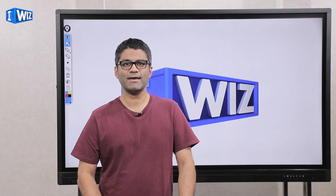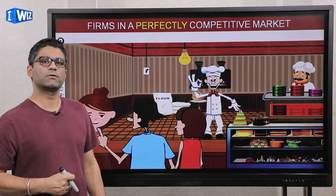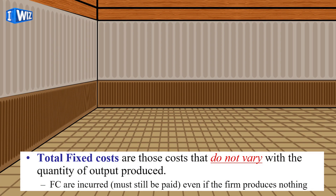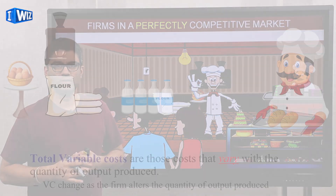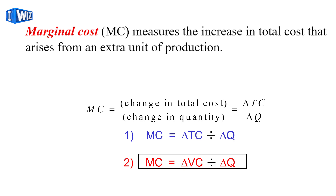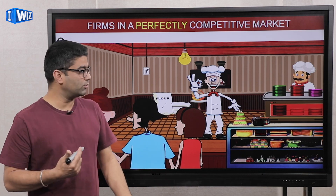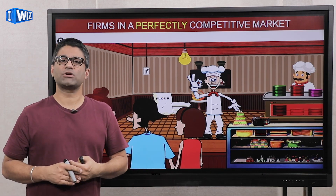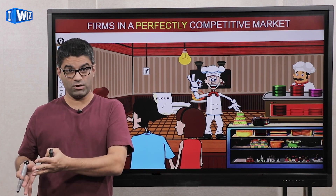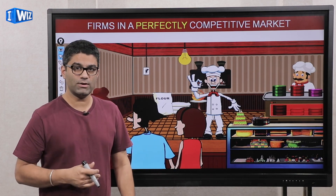Hey guys, hope you're ready to learn about how decisions are made in a perfectly competitive market. In the previous chapter we talked about costs — fixed costs, variable costs, marginal costs — graphically, numerically, and theoretically. In this chapter, your Baker is going to have some customers. We'll cover how much he's going to sell, what price he can charge, and what profits he can earn. Now we're going to talk about revenue and how much he can sell, and eventually bring everything together.